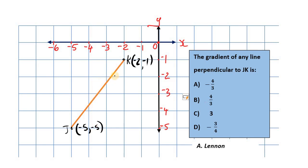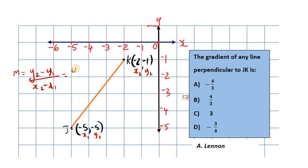To find the gradient of this line, we can use a formula or even just use rise over run. Let's use the formula. We label J as (x1, y1) — the first point — and K as (x2, y2) — the second point. The gradient formula is M = (y2 − y1) / (x2 − x1). It's also fine to use (y1 − y2) / (x1 − x2), as long as the order is consistent. Just remember: start with y1, start with x1; start with y2, start with x2. The y's are always on top and the x's below.